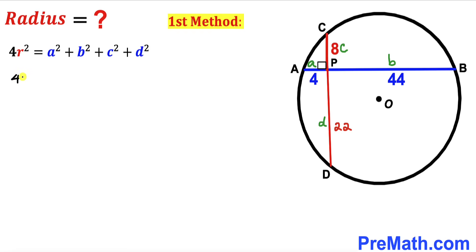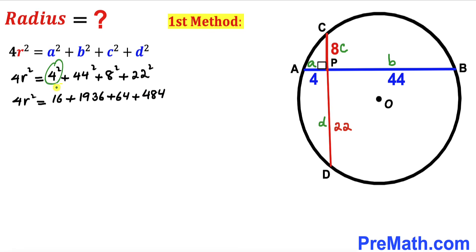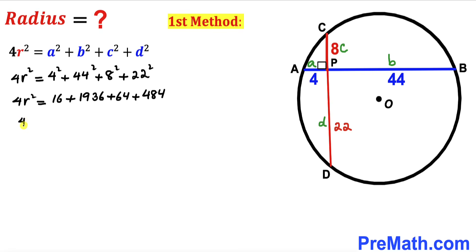Filling in the formula: 4r² equals 4² plus 44² plus 8² plus 22². Computing each term: 4² is 16, 44² is 1936, 8² is 64, and 22² is 484. So 4r² equals the sum of all these right-hand side values.